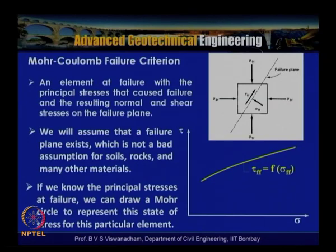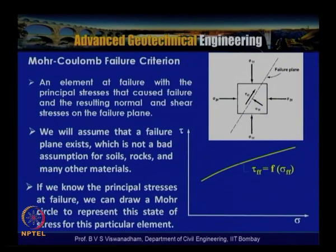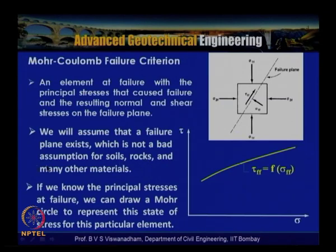We assume that a failure plane exists — not a bad assumption for soils, rocks, and many other materials. If the material is homogeneous and there are no stresses along the principal planes, conjugate failure planes are possible, meaning failure planes can form in both directions. Knowing the principal stresses at failure, we can draw a Mohr circle to represent the state of stress for the element and obtain the strength at failure.